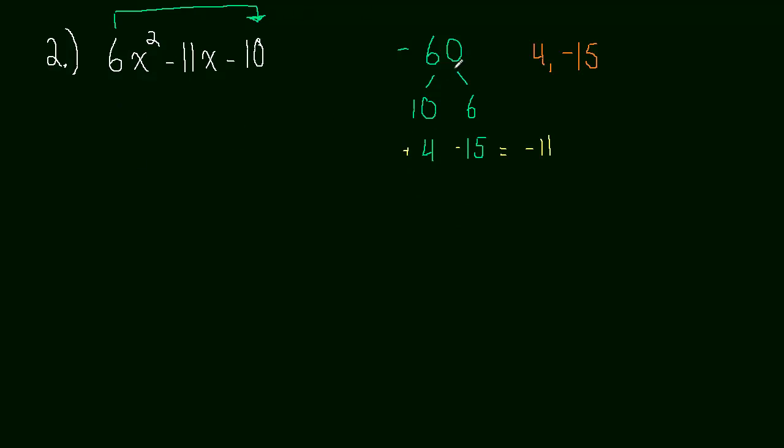Let's continue here. We're going to take our 6x squared, leave that alone, our negative 10, leave that alone, and then we're going to rewrite negative 11x as positive 4x minus 15x. Of course, that is negative 11x. And now we're going to group.